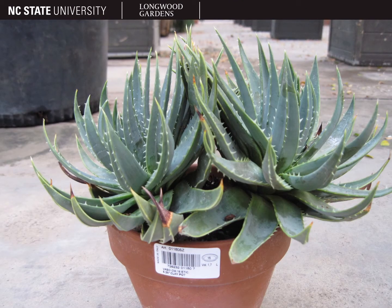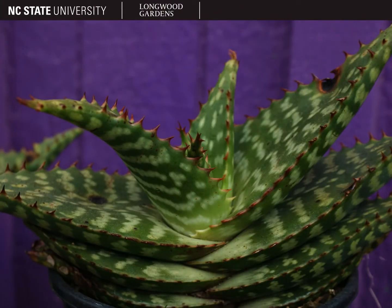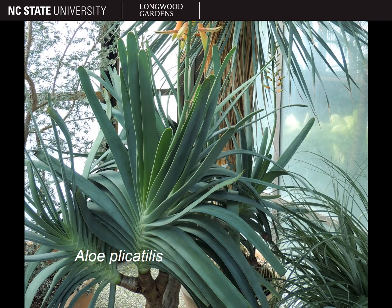Some aloes may even have teeth along the back of the leaves. The leaves of some aloes may almost be arranged in a flattened alternate arrangement rather than a rosette. You can see that here really well on aloe plicatilis, or the fan aloe, which is one of the larger branching types. You'll remember the term plicate from the begonia lecture, which means folded like a fan, which is where this species gets its specific epithet.